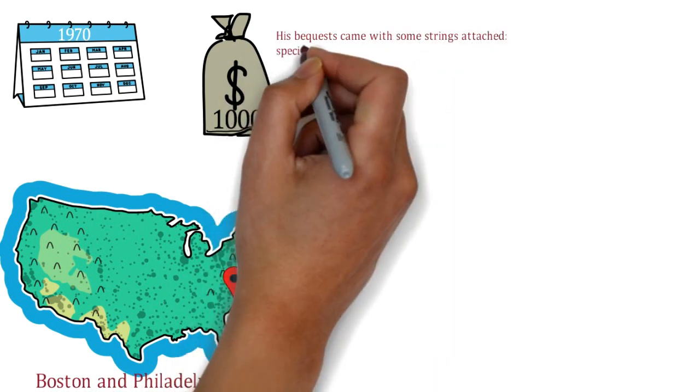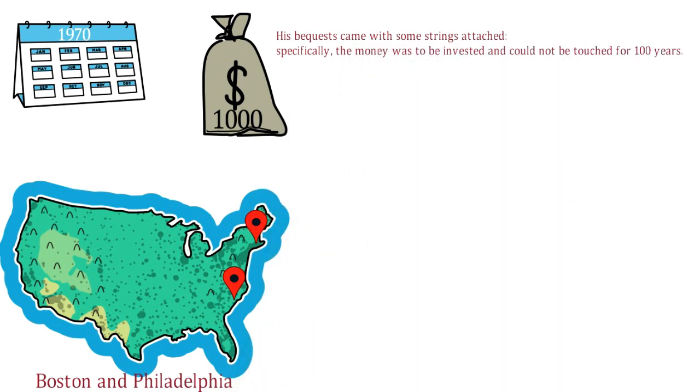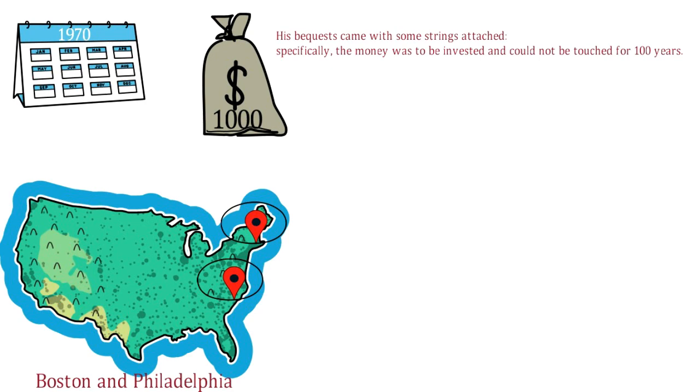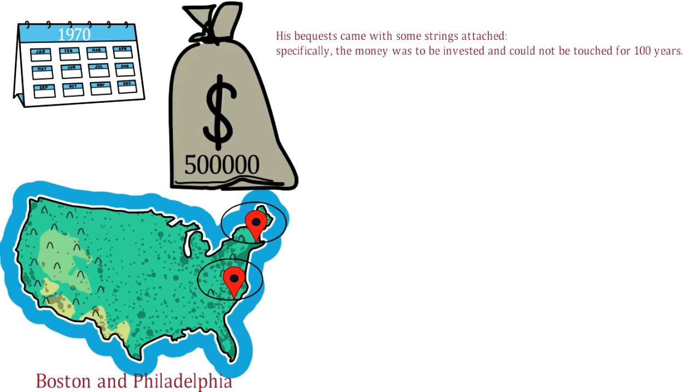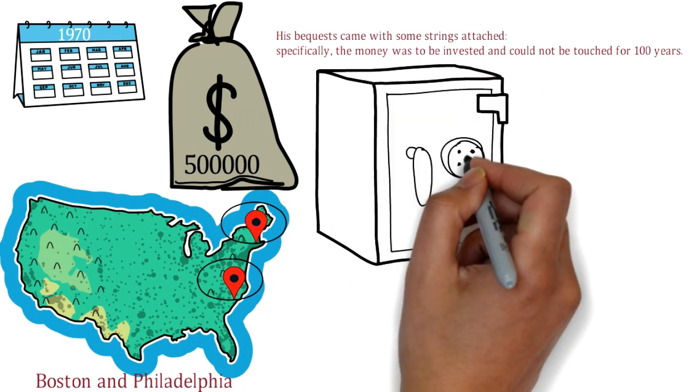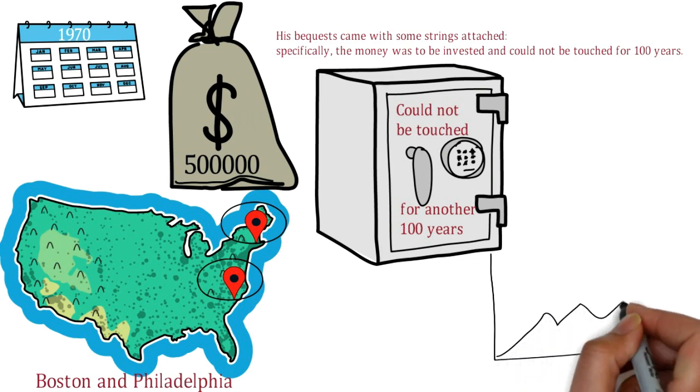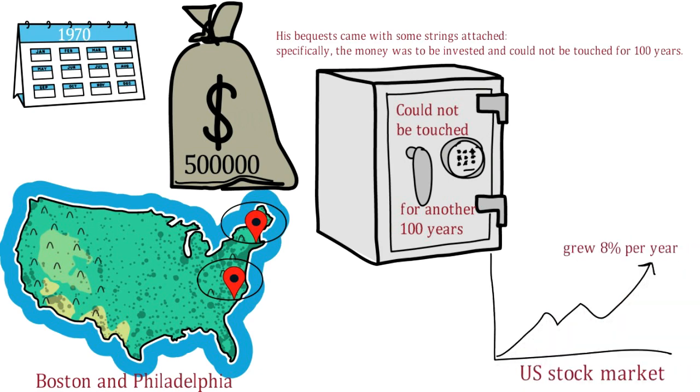Specifically the money was to be invested and could not be touched for 100 years. At that point each city could withdraw up to $500,000 for designated public works projects. Any remaining money in the account could not be touched for another 100 years. During that period the U.S. stock market grew at an average of 8% per year.